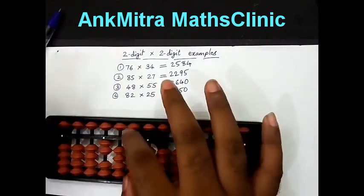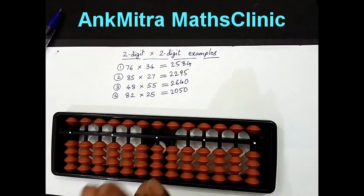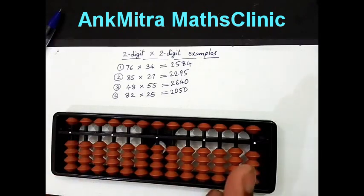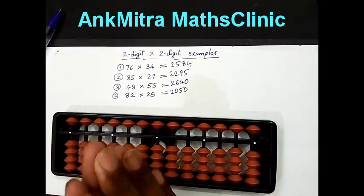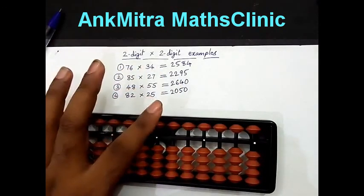In any multiplication calculation, like in tables also what we teach is while by-hearting the tables, we tell students to by-heart all one-digit into one-digit answers as a two-digit answer. Something like seven fives are 35 is a two-digit number, but two threes are six is not a two-digit number. In that case, we ask students to by-heart it as two threes are zero six and not just six. One digit multiplied by one digit gives us a two-digit answer. Two digit multiplied by one digit gives us a three-digit answer, and two digit multiplied by two digit will give us a four-digit answer.